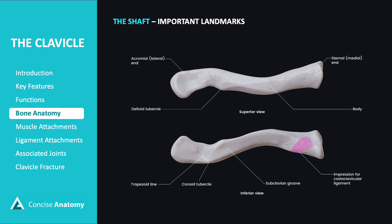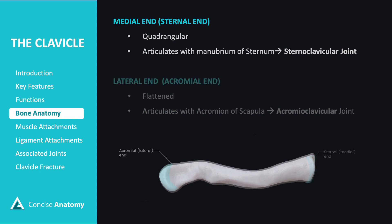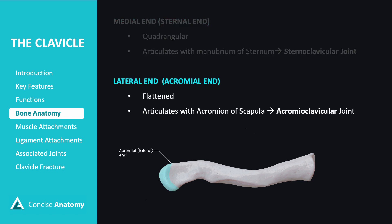The costoclavicular ligament attaches to an oval impression at the medial end, while the subclavius muscle inserts into the subclavian groove, which also houses the clavicle's nutrient foramen at its lateral end. The medial end of the clavicle articulates with the manubrium of the sternum, forming the sternoclavicular joint, which serves as the only bony attachment of the upper limb to the axial skeleton. The lateral end is flattened and articulates with the acromion of the scapula, forming the acromioclavicular joint.